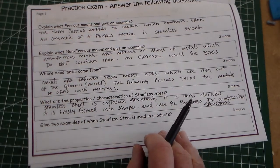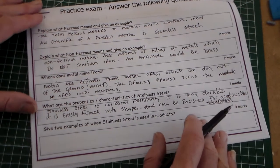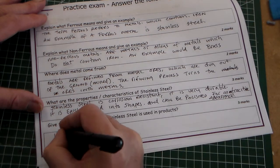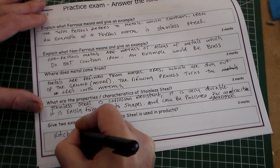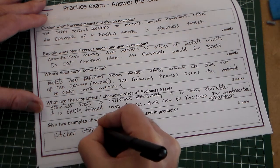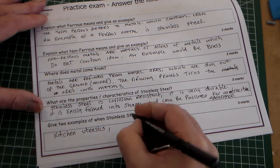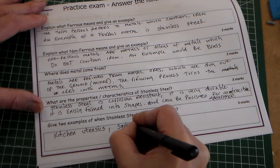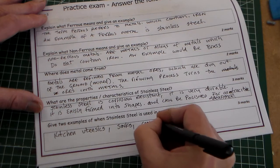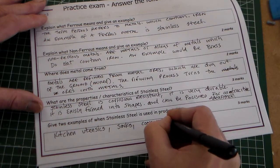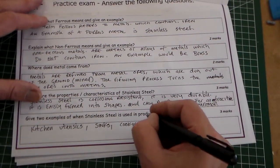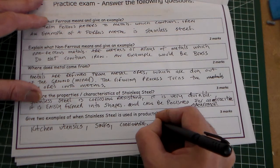And last of all, give two examples of when stainless steel is used in products. So what products is used in stainless steel? Well, obviously the first one that comes to mind would be kitchen utensils, kitchen sinks, so we can say sinks, cookware, saucepans, things like that. That's three. I'm trying to think of something outside the kitchen: medical equipment, scalpels, lots of things, all medical equipment.